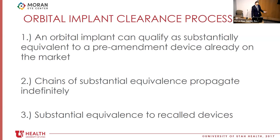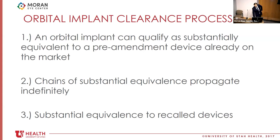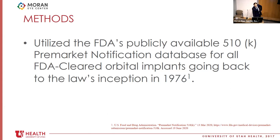We utilized the FDA's publicly available 510(k) pre-market notification database for all FDA-cleared orbital implants going back to 1976, tracing chains of substantial equivalence as best we could. We identified 29 orbital implants brought to market over this time period. Only 9 of those implants — about a third — anywhere in their available pre-market application even listed a predicate device; a lot of that is done behind closed doors with the FDA. A total of 4 of the 29 orbital implants were recalled for safety reasons such as extrusion and unacceptable infection rates.